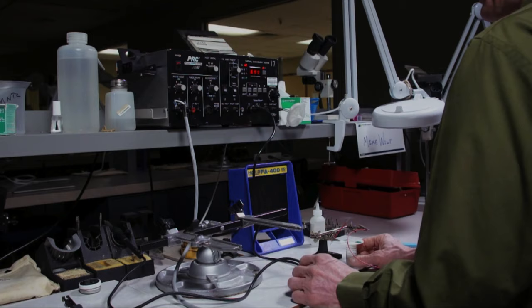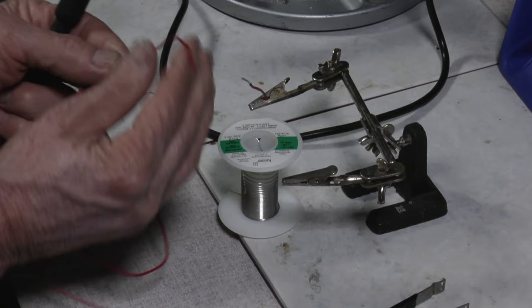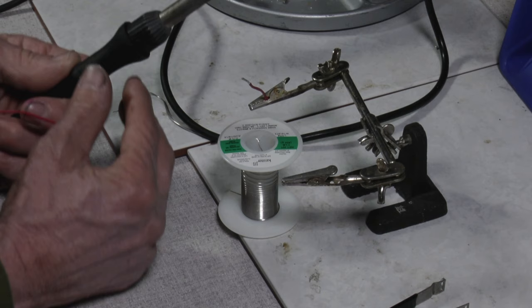Now, since we have our solder iron preheated to 720, I'm going to be soldering a piece of wire and tinning it.